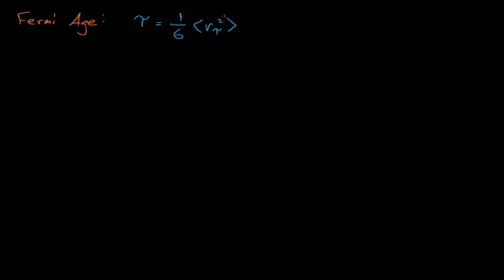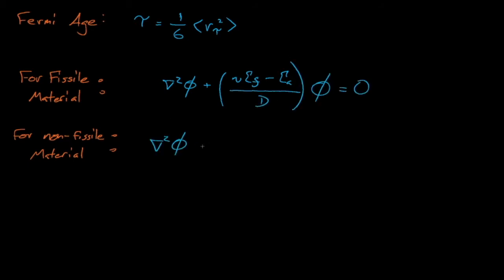So why do we need to define the diffusion length? Well, if we consider the neutron diffusion equation in a non-fissioning region, we see that nu-sigma fission equals zero, and that our diffusion equation reduces to the Laplacian of phi minus one divided by the diffusion length squared times phi. Thus, we will have to solve this equation to determine the neutron flux distribution in a non-fissioning reflector region.